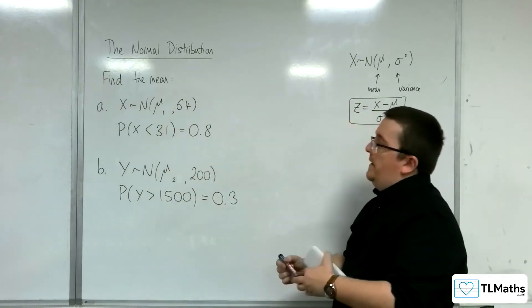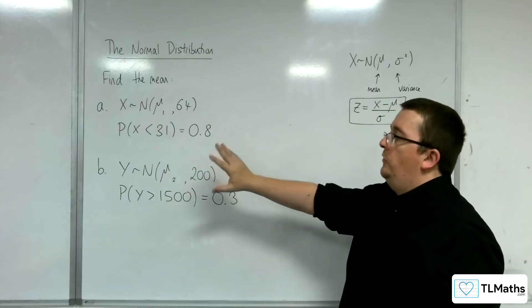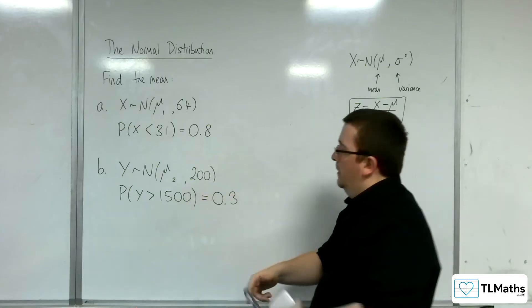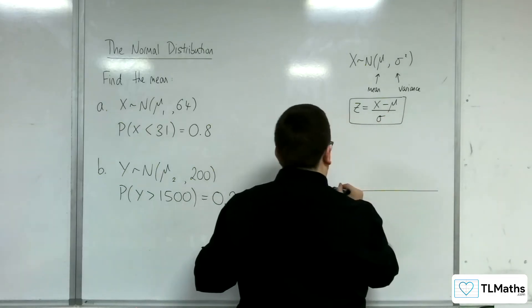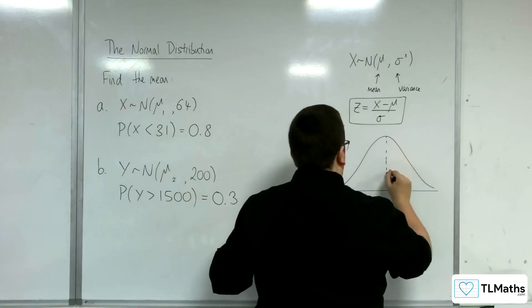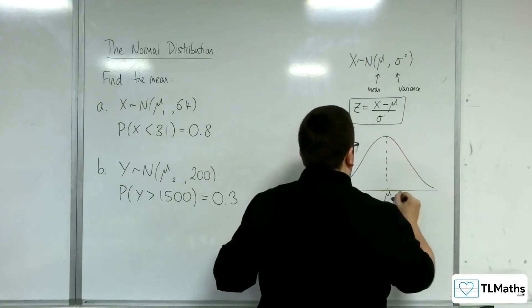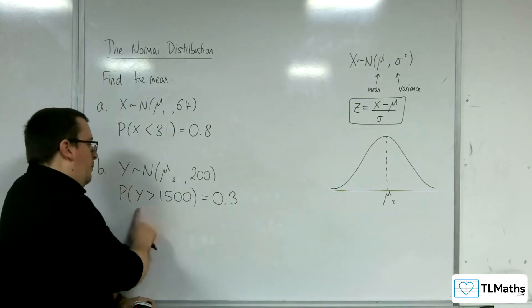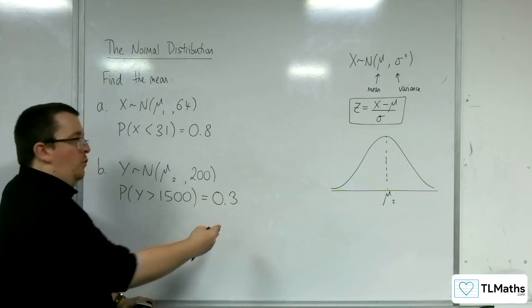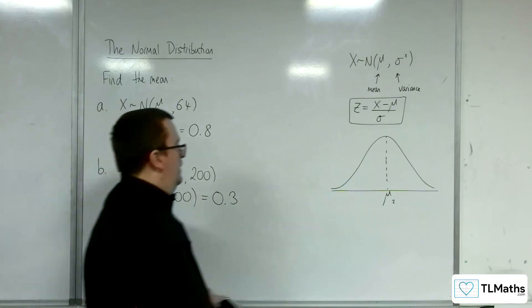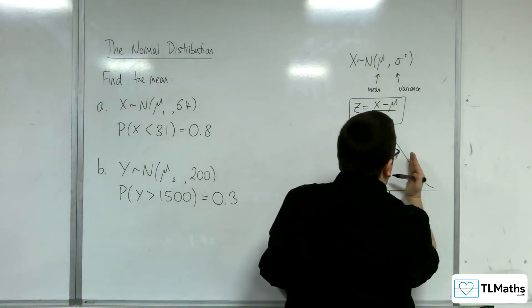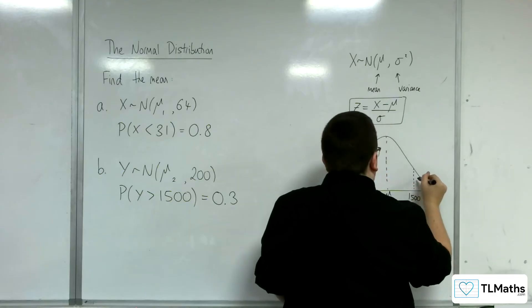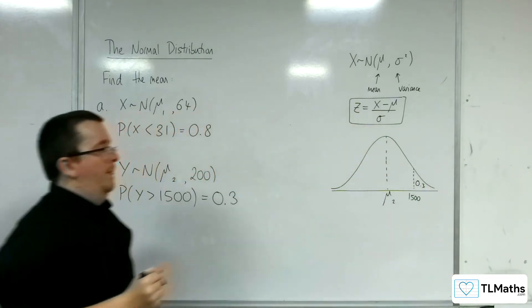Let's have a look at part B. So Y now, we're using Y. This is normally distributed with a mean μ₂ and a variance of 200. So let's draw a diagram. So there's μ₂. So to the right of 1500 is an area of 0.3. So that means it must be to the right of μ₂. So 1500 must be over here in order for that to be 0.3.